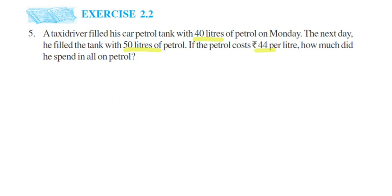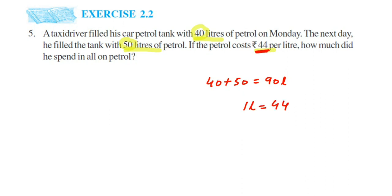We are going to first add the total petrol he filled. First day it was 40 liters and second day it was 50 liters, so total petrol will be 90 liters. He is being charged 44 rupees per liter, so for 90 liters we have to multiply. So 90 multiplied by 44 — whatever answer we get will be the total price.